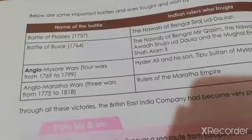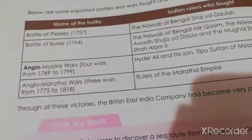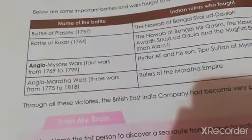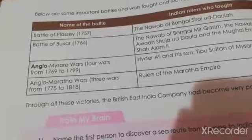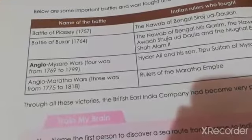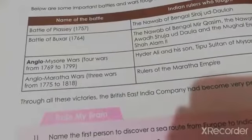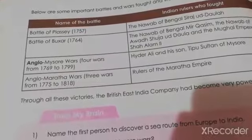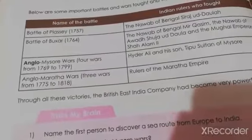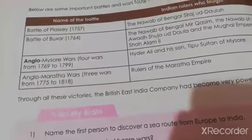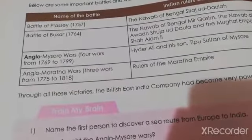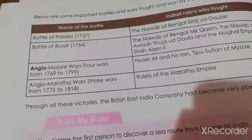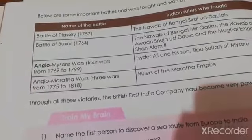The second one is the Battle of Buxar, fought in the year 1764 between the British and the Nawab of Bengal Mir Qasim, the Nawab of Awadh Shuja-ud-Daula, and the Mughal Emperor Shah Alam II.